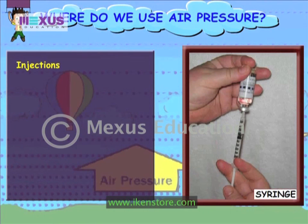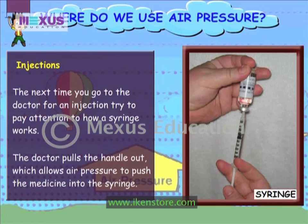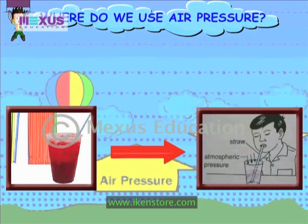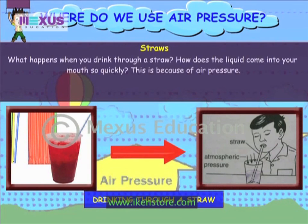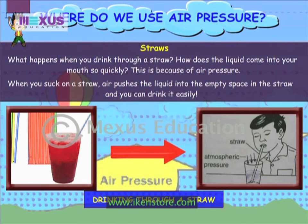Injections. The next time you go to the doctor for an injection, try to pay attention to how a syringe works. The doctor pulls the handle out, which allows air pressure to push the medicine into the syringe. Straws. When you drink through a straw, air pushes the liquid into the empty space in the straw so you can drink it easily. This is because of air pressure.